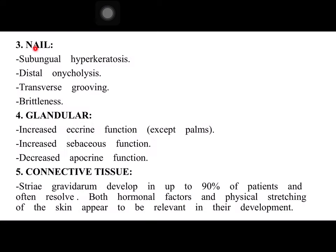Changes in the nail include subungual hyperkeratosis, distal onycholysis, transverse grooving, and brittleness. Changes that occur normally in the glands include increased eccrine function — that is, increased sweating — except in the palm, increased sebaceous function, and decreased apocrine function.